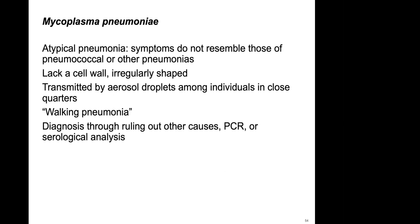Mycoplasma pneumoniae causes atypical pneumonia — symptoms do not resemble typical pneumococcal pneumonia. These bacteria lack a cell wall, and this is what we typically call 'walking pneumonia,' meaning you feel terrible but it's not enough to land you in a hospital bed. It can be treated with oral antibiotics instead of IV antibiotics.